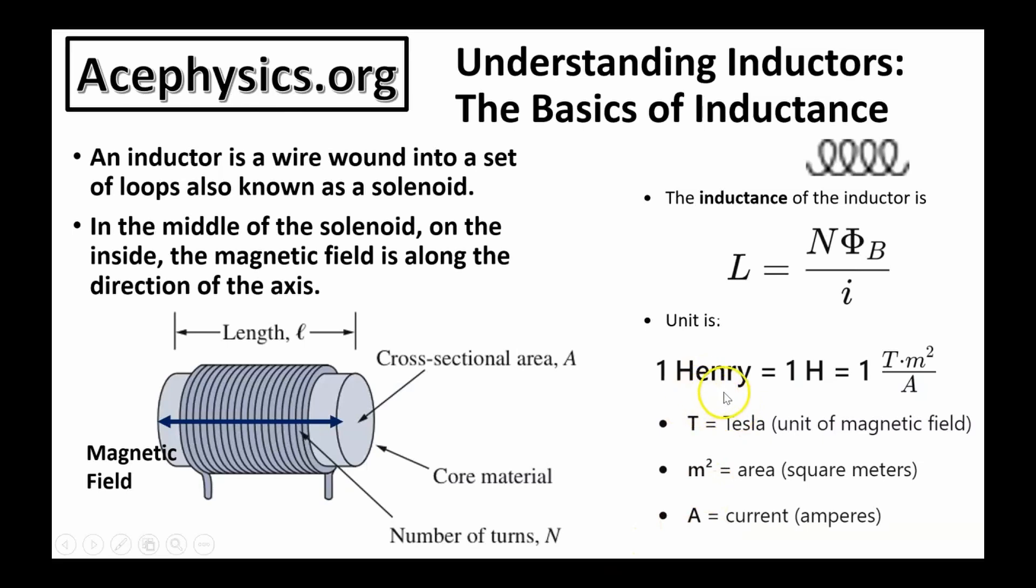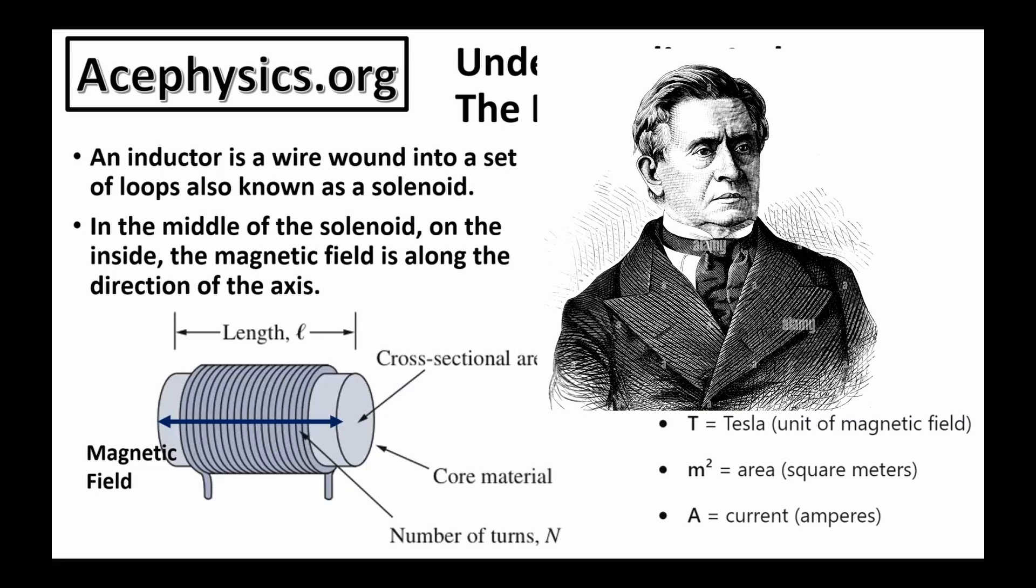The unit of inductance is the Henry. One Henry equals one Tesla meter square per ampere. Joseph Henry is a man with two first names.